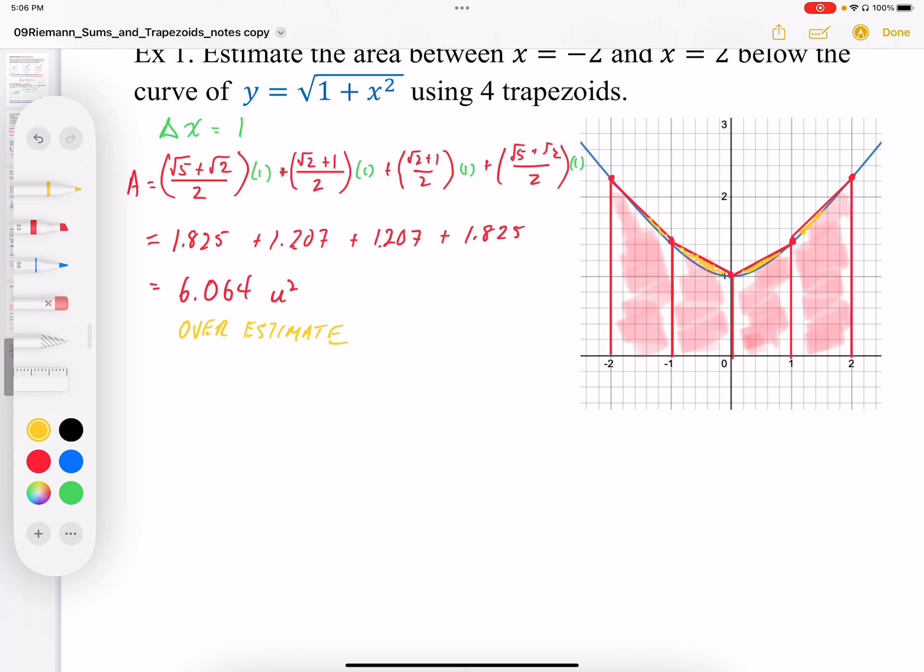In the case of Riemann sums, it was when the graph was increasing versus decreasing and right edge versus left edge. In the case of trapezoids, it's a different issue. So it's important to make sure that we don't mix Riemann sums overestimates and underestimates with trapezoids.